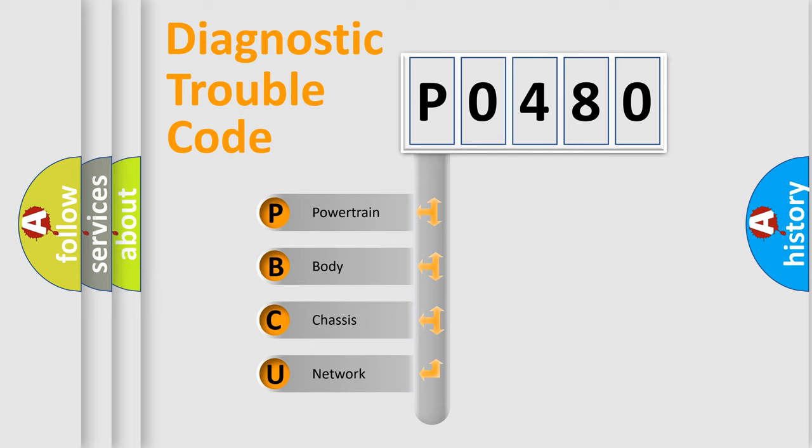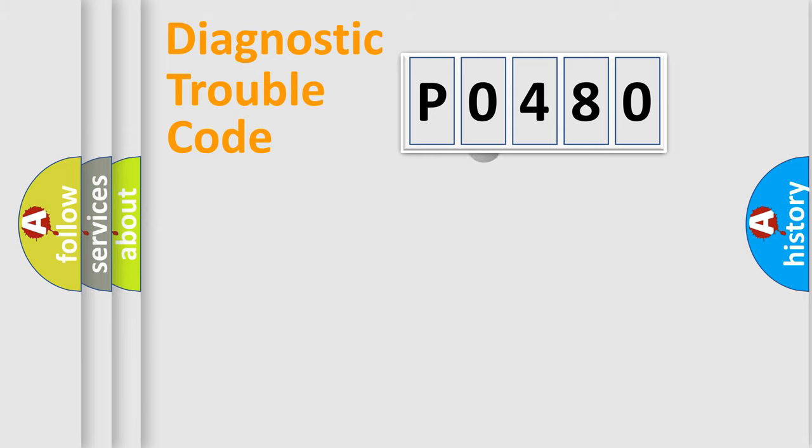We divide the electric system of automobiles into four basic units: powertrain, body, chassis, and network. This distribution is defined in the first character code.